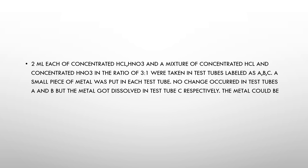The test tubes were labeled as A, B, and C. A small piece of metal was put in each test tube. No change occurred in test tubes A and B, but the metal got dissolved in test tube C. The metal could be — as we know, a mixture of concentrated HCl and concentrated HNO3 in the ratio of 3:1 is known as royal water.